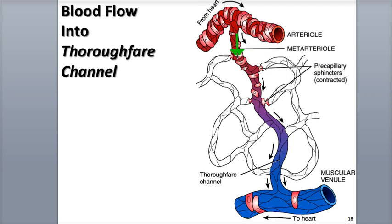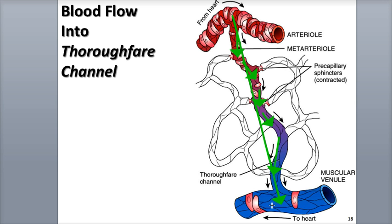As the meta-arteriole enters into the capillary bed, it loses its smooth muscle and is known as the thoroughfare channel. This vessel acts like a bypass around the capillary bed, allowing blood to flow directly from the arteriole into the venule.